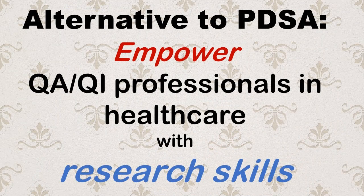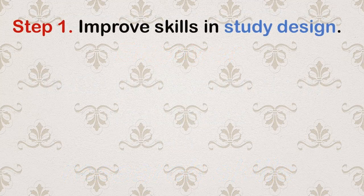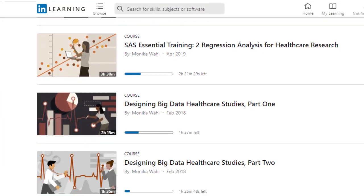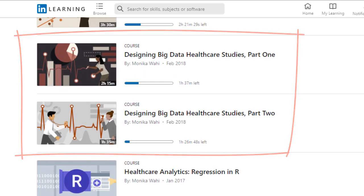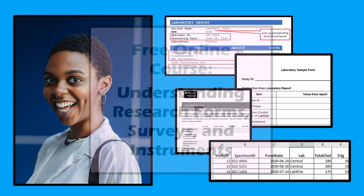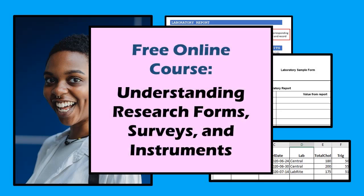As an alternative to the PDSA model, I propose we instead empower the QAQI professional with research skills through a three-step process. In step one, the QAQI professional gains more knowledge in study design. For example, you could take my course series in study design with big data on LinkedIn Learning. You could also try my new self-published free online course, Understanding Research Forms, Surveys and Instruments.